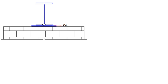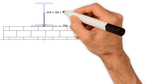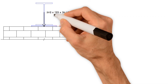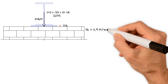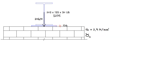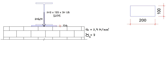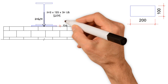Let's take a practical example. A 203 x 133 x 30 UB steel beam, grade S275, is supported by two existing masonry walls, and a bearing steel plate is required to take the reactions of the steel beam and transfer the force to the wall. The maximum factored reaction of the beam is 20 kN. The characteristic compressive strength of the existing masonry walls is assumed to be 2.9 N/mm² and the partial safety factor for material strength is 3. The bearing plate, grade S275, has dimensions of 100 mm in width and 200 mm in length. What is the appropriate thickness of the plate?